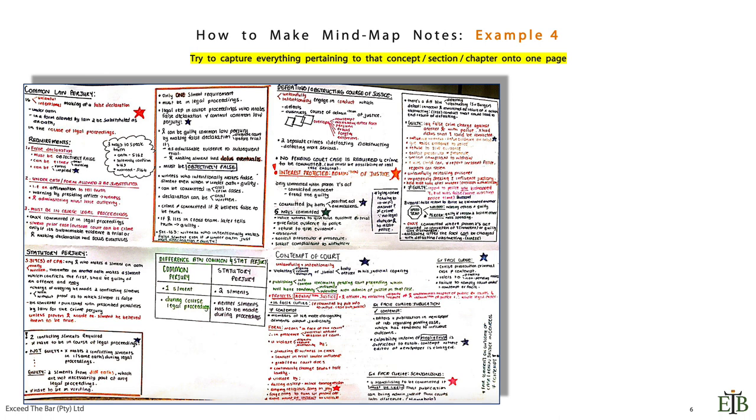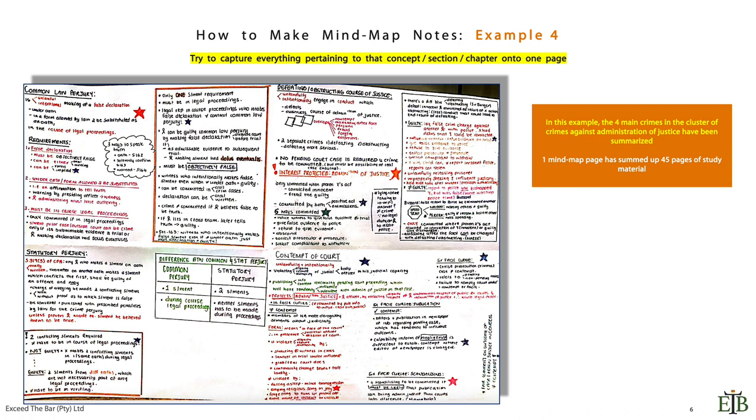A fourth example here is to try to capture everything pertaining to that particular concept or chapter onto one page again. So here we were dealing with common law perjury, defeating or obstructing the course of justice, contempt of court and statutory perjury. Comparing all four of these concepts and crimes. One mind map page has summed up about forty-five pages of study material. Come on guys, this is what you want to do. You can write your exam from this page because once you've gone through it, you understand it. You've extrapolated the key important information.